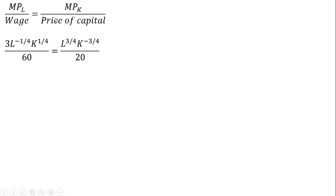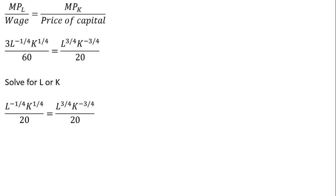So the optimal condition: here's the marginal product of labor, the wage is $60, here's the marginal product of capital, and the price of capital is $20. We want to simplify and solve for either L or K. First, 3 divided by 60 simplifies to 1 over 20. Since we have a 20 on both sides, multiplying everything through by 20 eliminates the denominator.